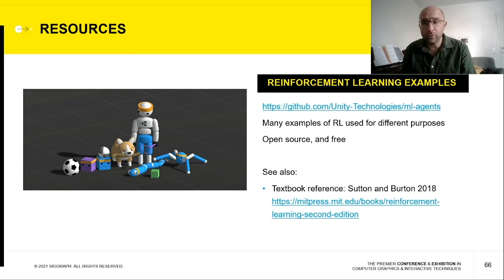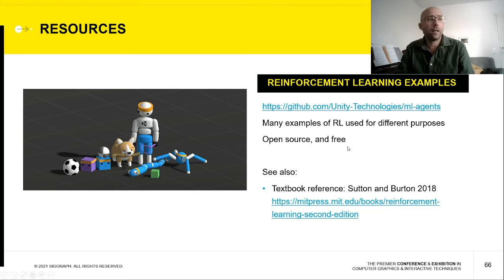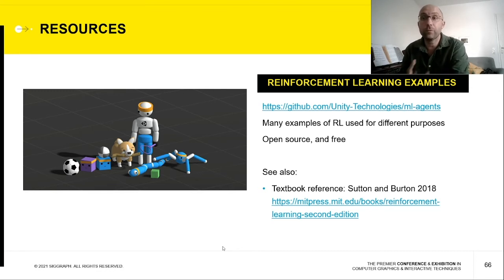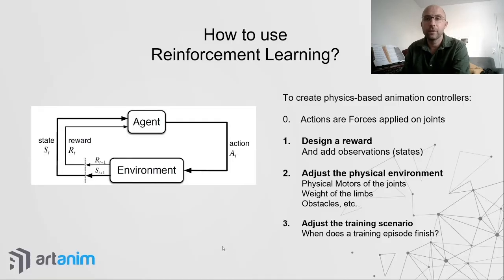If you want to learn more about reinforcement learning and deep reinforcement learning, the backbone we use in the Marathon Environments project is ML Agents — a project developed over the last two or three years, very useful for training agents in Unity. It has many examples, is open source and free. For a more academic approach, the Sutton and Barto book is the main reference.